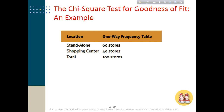Look at this example — it's taken from a textbook and involves Papa Zone's Pizza. They have stores located in standalone locations and in shopping centers. They expected the number of stores in each location type to be the same. They surveyed 100 stores and found that 60 stores are located in a standalone location and 40 stores are located in shopping centers. These 60 and 40 are the observed frequencies.